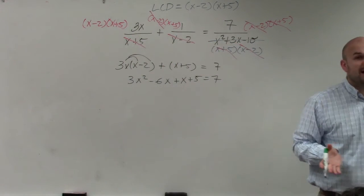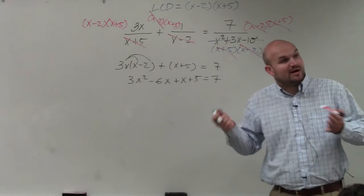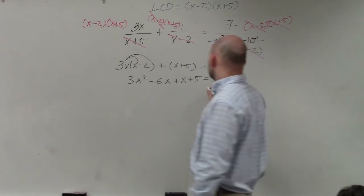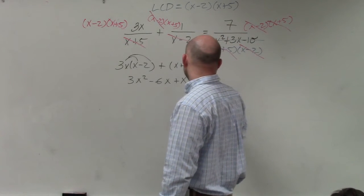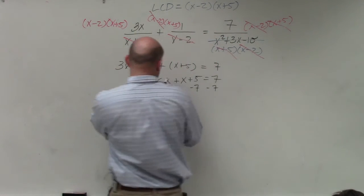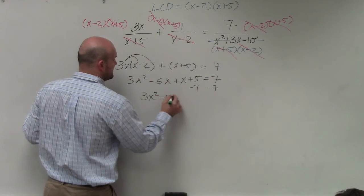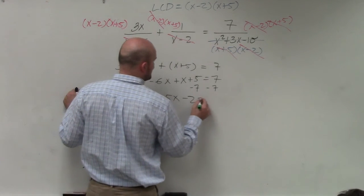I notice that this is a quadratic. Since this is a quadratic, I'm going to want to set everything equal to 0 so I can go ahead and solve. So I will subtract the 7 here. I can combine my middle two terms. 3x squared minus 5x minus 2 equals 0.